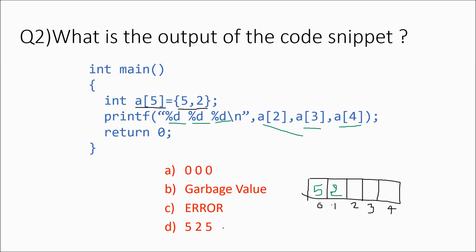Remember this — whenever you just declare an array like int A[5] with a semicolon, there will be garbage values. But when you initialize only the first two indexes of the array, the rest are automatically initialized to zeros by the compiler. So when you print a[2], a[3], and a[4], you are going to get option A — 0, 0, 0.